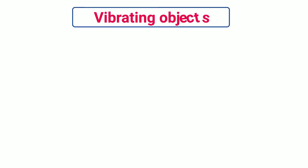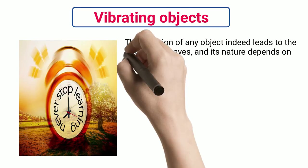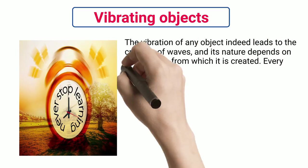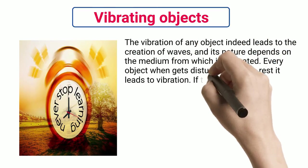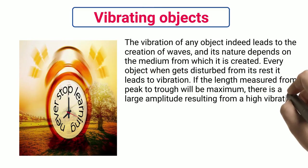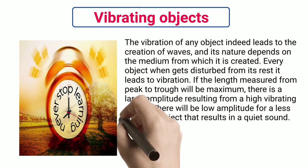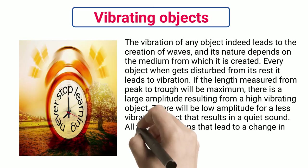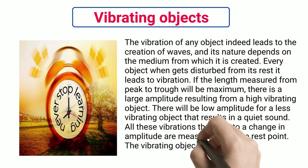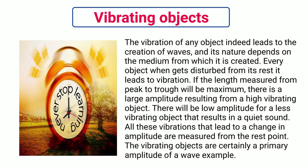Vibrating Objects: The vibration of any object indeed leads to the creation of waves, and its nature depends on the medium from which it is created. Every object, when disturbed from its rest, leads to vibration. If the length measured from peak to trough is maximum, there is a large amplitude resulting from a high vibrating object. There will be low amplitude for a less vibrating object, resulting in a quiet sound. All these vibrations that lead to a change in amplitude are measured from the rest point. Vibrating objects are certainly a primary amplitude of a wave example.